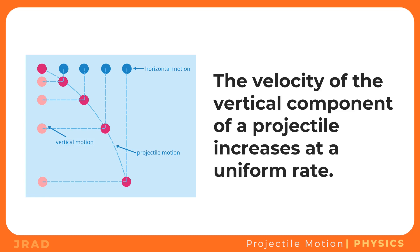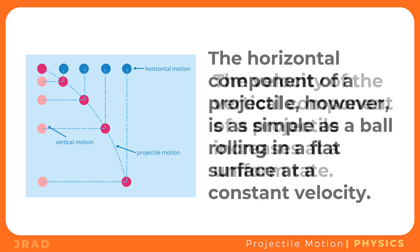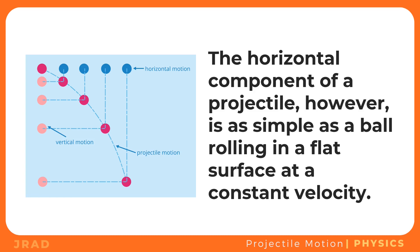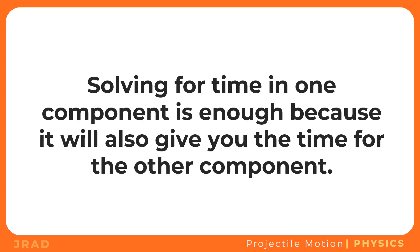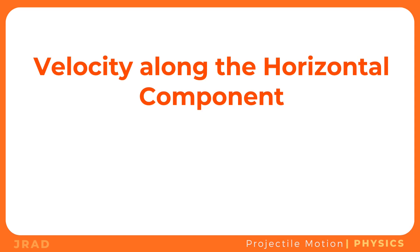The vertical component of a projectile is similar to a freely falling object — as it falls, the distance it covers increases per time interval, meaning its velocity increases at a uniform rate. The horizontal component, however, is like a ball rolling on a flat surface at constant velocity, sometimes referred to as the x-component since it moves along the x-direction. The time it takes for the projectile to cover the vertical distance is the same as the time it requires to cover the horizontal distance, so solving for time in one component is enough. The two components of a projectile are independent of each other and have different quantities, except for time.